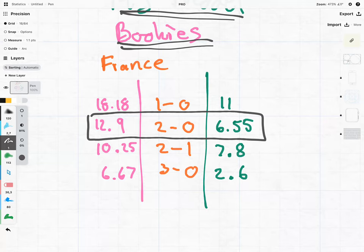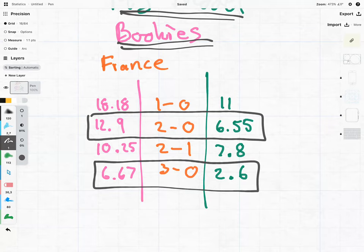But according to my model, that's one of the worst things to bet on. Also, 3-0 to the French. Also not that good. 2-1, we were a little bit closer.